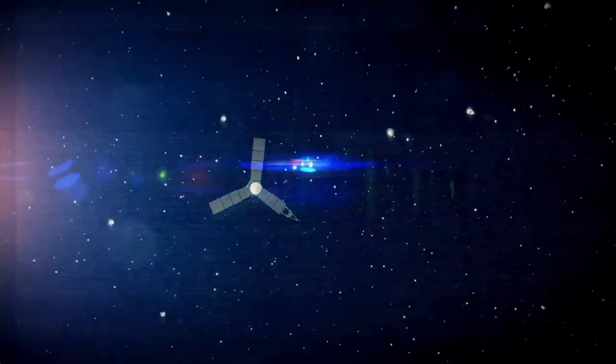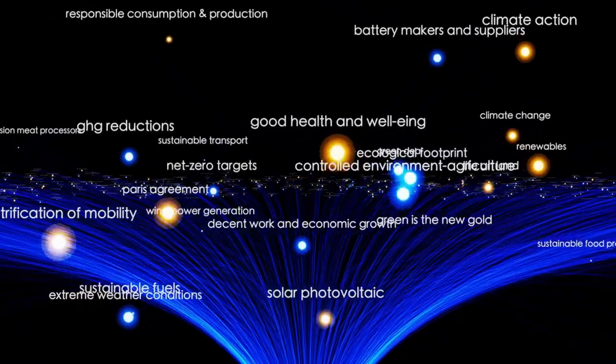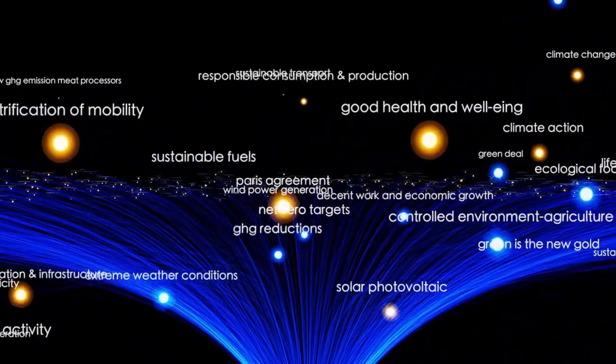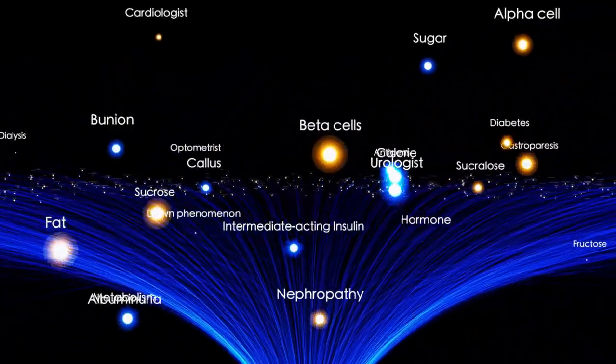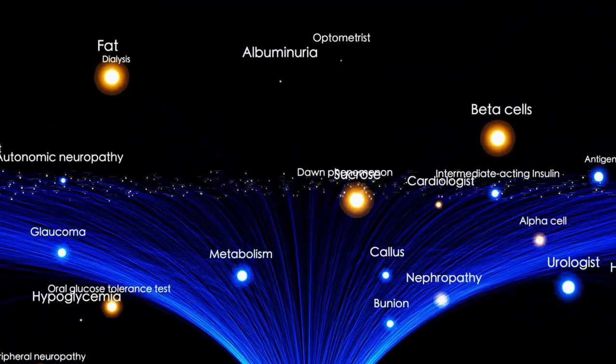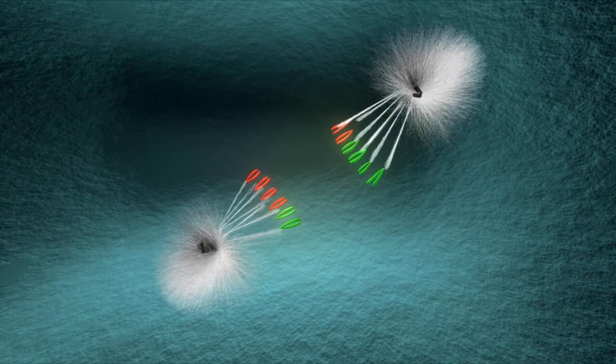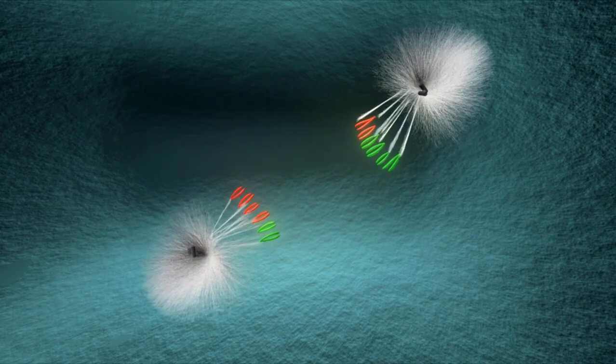The outer edge of the heliosphere, known as the heliopause, marks the transition into interstellar space. Voyager 1 confirmed its crossing when it detected a solar eruption that caused surrounding electrons to vibrate. The data revealed that interstellar space is denser than regions near the sun, while the heliosphere's outer edge is much less dense.